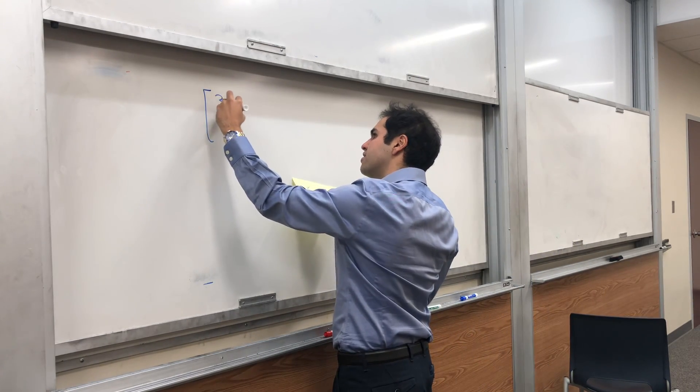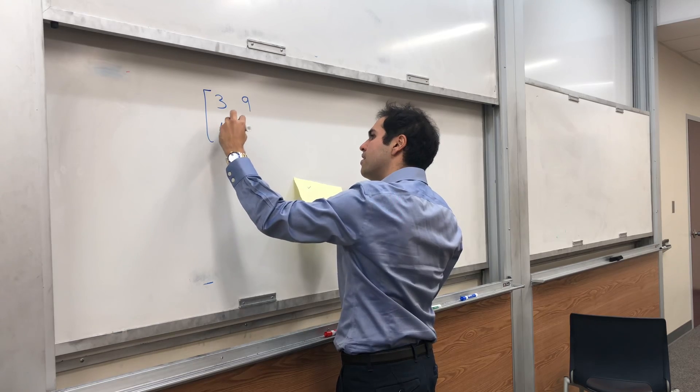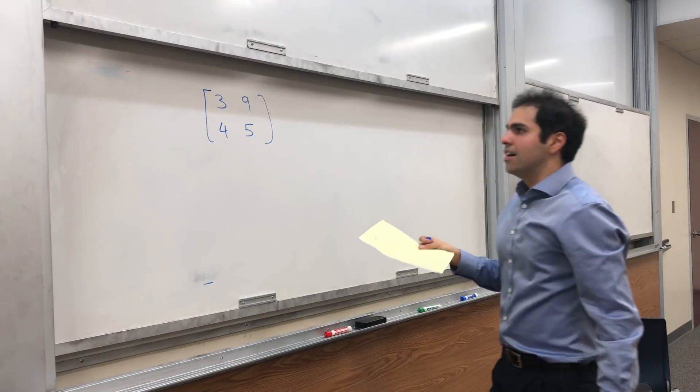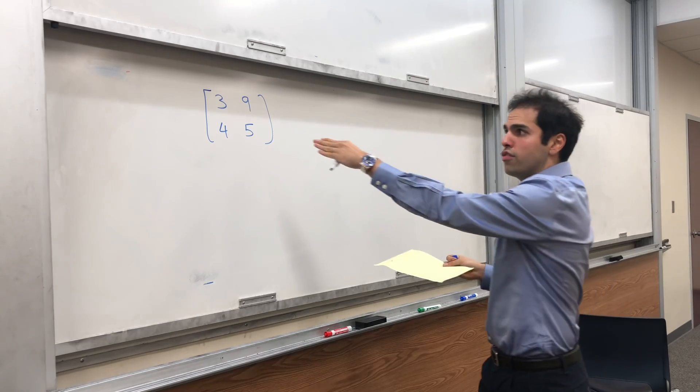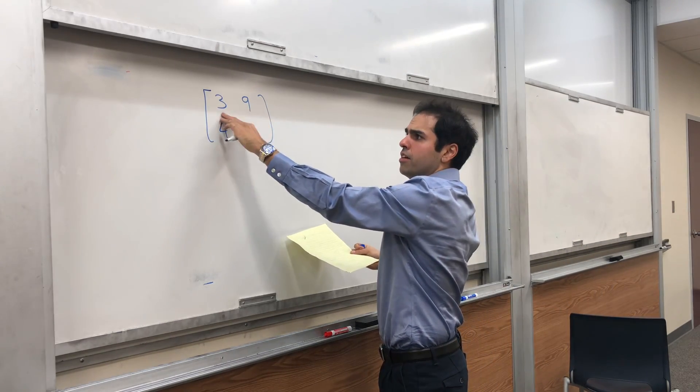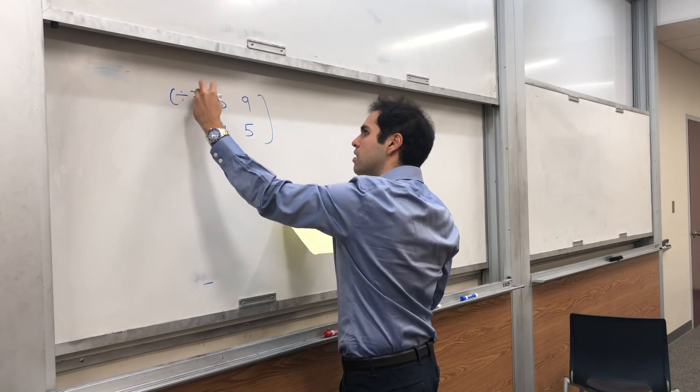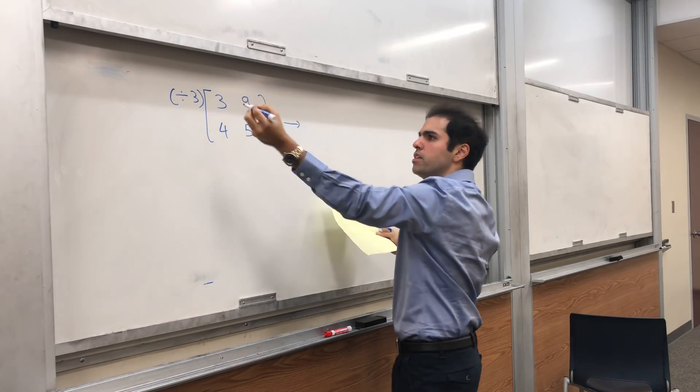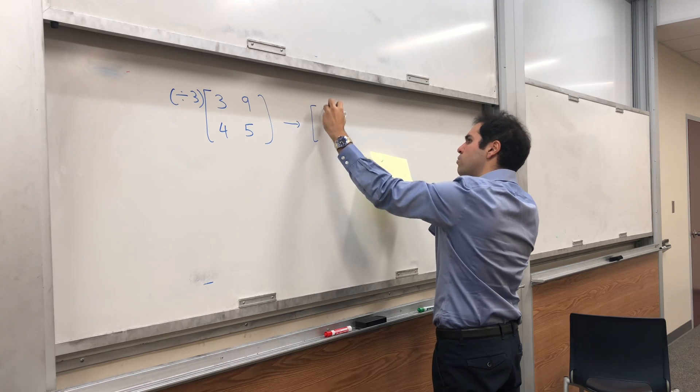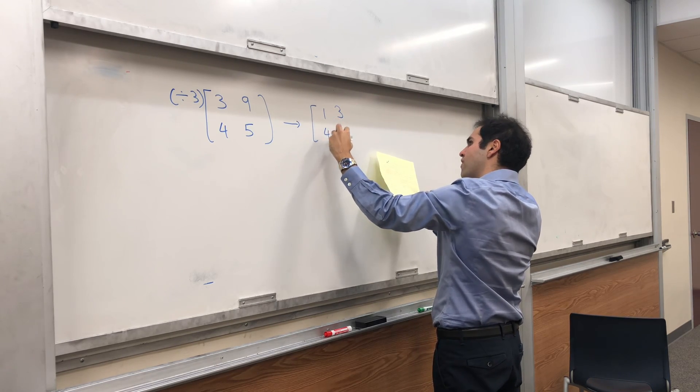We have the matrix 3, 9, 4, 5. Then notice first of all, we can divide this by 3. So the first step would be division by 3 to get 1, 3, 4, 5.